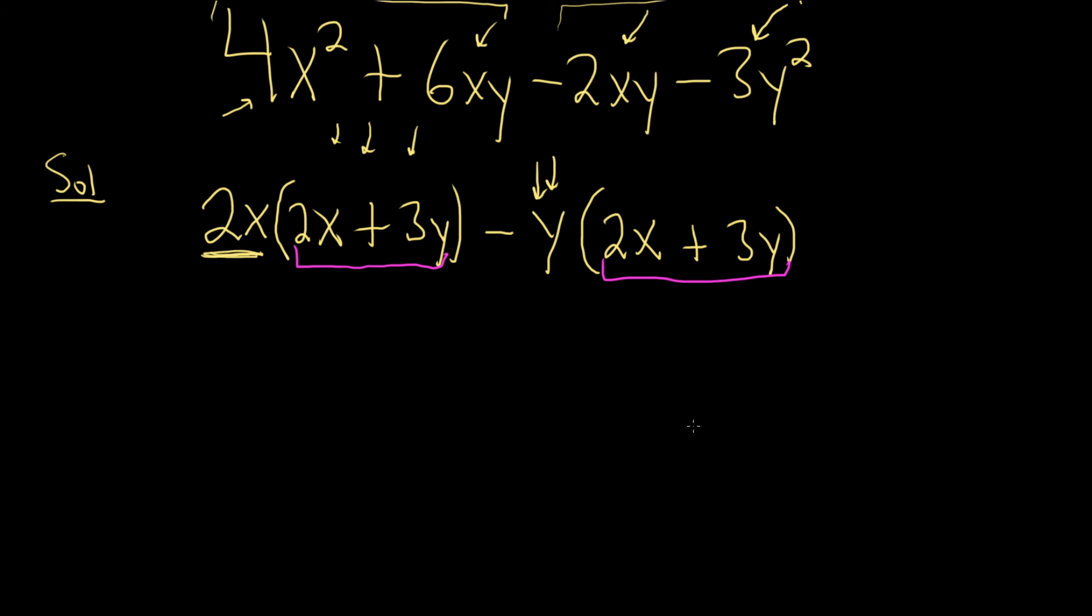Okay, so now we can pull out a common factor again, and the common factor is right here. 2x plus 3y, 2x plus 3y. So you write it down. 2x plus 3y, parentheses.